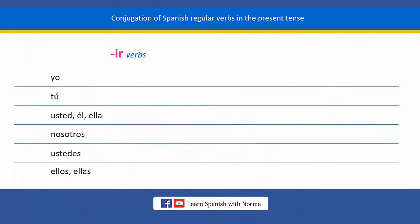The third and last group of Spanish regular verbs ends in IR. These are the endings we use to conjugate all Spanish regular verbs that end in IR. Each ending must agree with its corresponding subject pronoun.